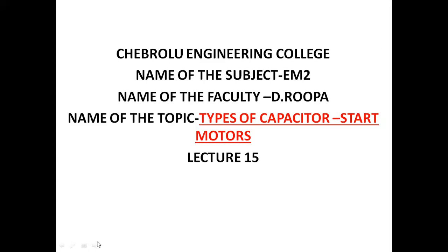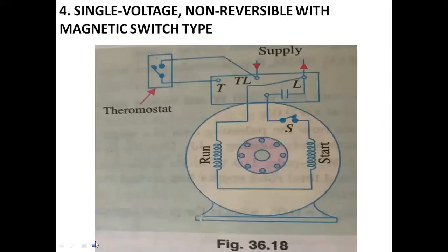We have already discussed three types of motors before. This is the fourth one: single voltage non-reversible with magnetic switch type. Before that, we had the thermostat type — single voltage reversible with thermostat type.